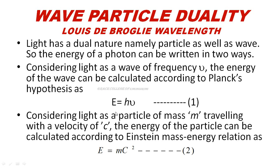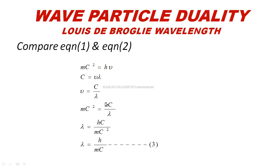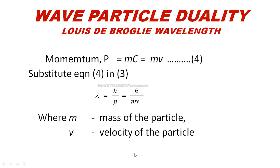In these two equations, the left-hand side is the same, so we equate the right-hand sides: MC squared is equal to H nu. We know velocity C is equal to frequency times Wavelength, or frequency nu is equal to C by Lambda. Substituting nu equals C by Lambda, we get MC squared equals HC by Lambda. Cancelling C, Lambda is equal to H by MC. This is equation number 3. Mass into velocity is called momentum P.